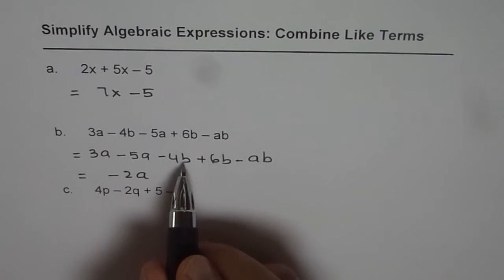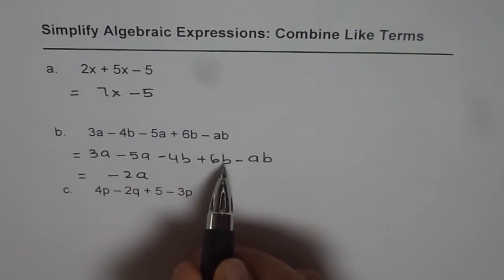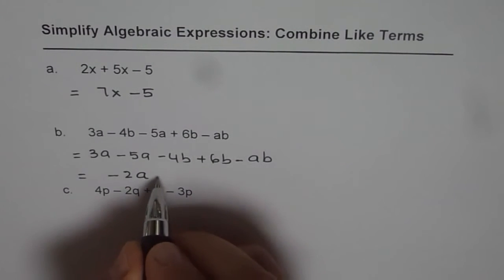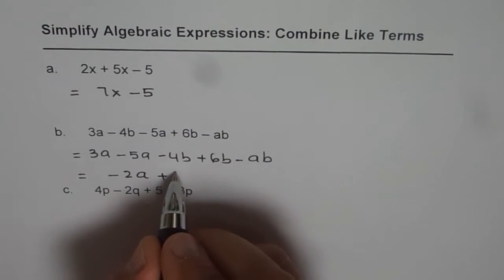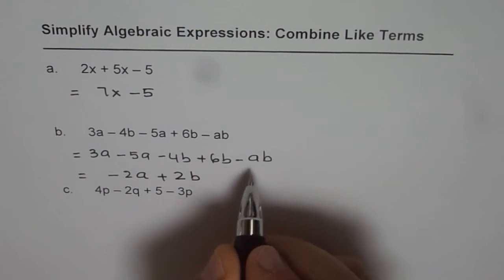Combining minus 4b plus 6b, we get plus 2b. 6 minus 4 equals 2b, then minus ab.